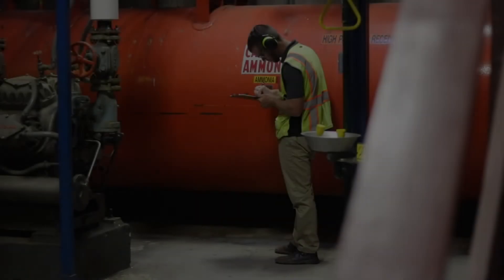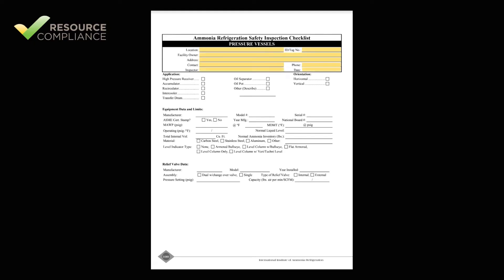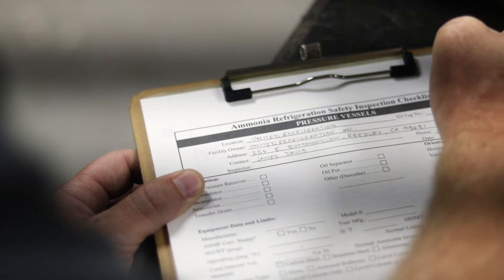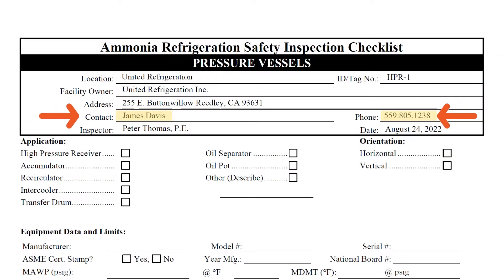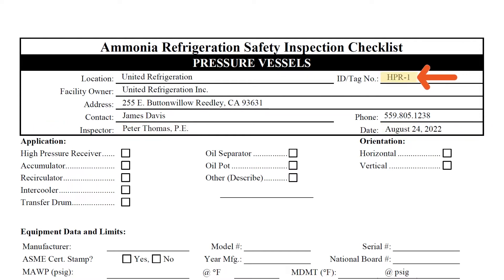The simplest part of completing a pressure vessel checklist is filling out the contact information. Each IIAR 6 checklist requires the inspector to indicate the location, owner, and physical address of the system. The contact name and phone number should be the facility representative responsible for ensuring the inspection is completed. Additionally, the inspector must write his or her own name and the date of the inspection. The ID or tag number belongs in the upper right corner and can typically be found on the equipment label or P&ID.